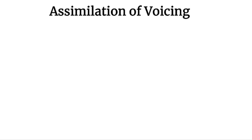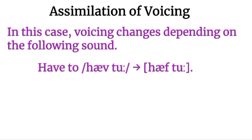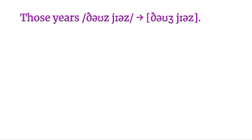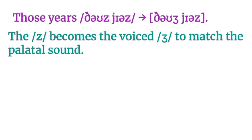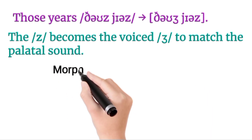The third type is assimilation of voicing, where voicing changes depending upon the following sound. The concept is the same: one sound is affected by the other. For example, 'have to' — in rapid speech we say 'haf to.' The voiced V becomes voiceless F to match the voiceless T. Another example: 'those years' — the Z would become more like a Y sound to match the palatal sound. So in assimilation, one sound is affected to make speech more fluent.